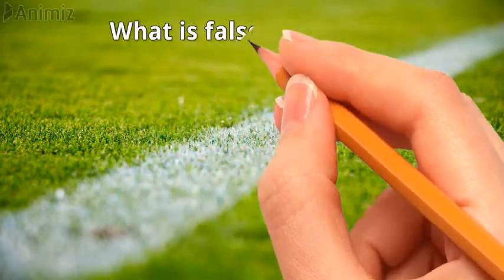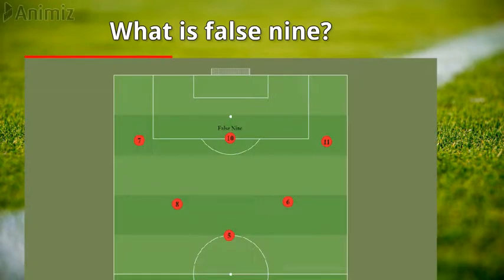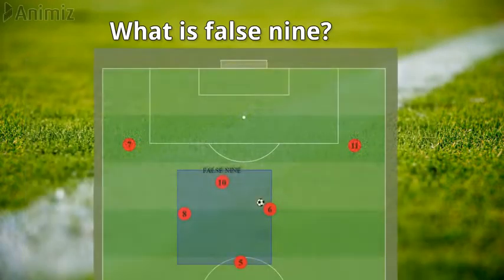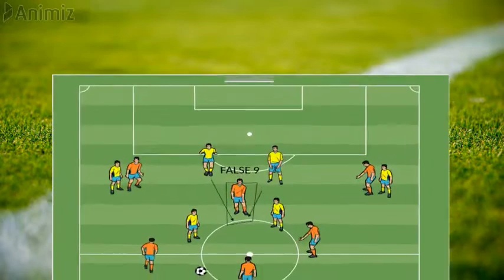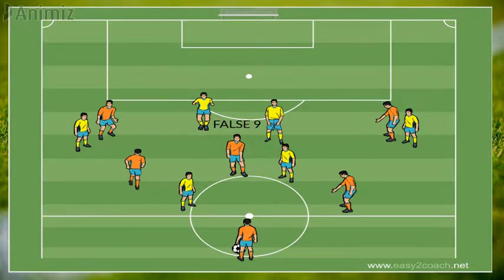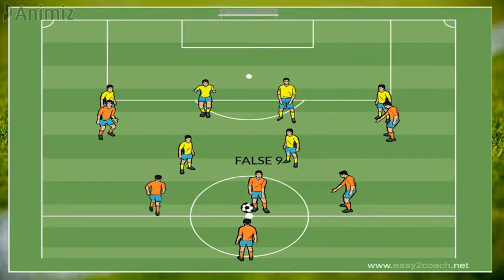First of all, what is False 9? The False 9 is in some way similar to a more advanced attacking midfielder, or a playmaker role as an unconventional lone striker or center forward who drops deep into midfield. The purpose of this is that it creates a problem for opposing centerbacks who can either follow the False 9, leaving space behind them for onrushing midfielders, forwards, or wingers to exploit, or leaving the False 9 to have time and space to dribble or pick out a pass.